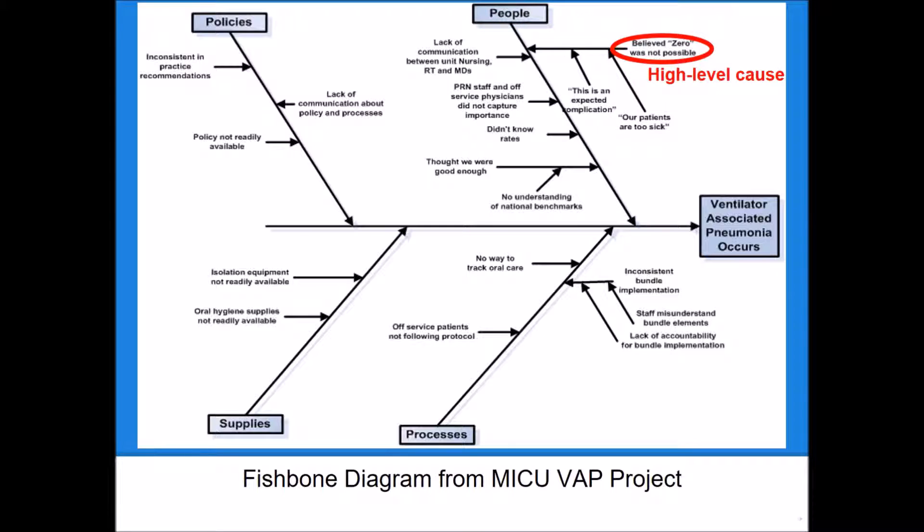They then dug down into, for instance, the people category to think of what specific causes might be contributing. For instance, they decided that many of the staff might not even believe it's possible to have zero ventilator associated pneumonias. But then they continued to ask why. Why might this be? And for instance, when talking to some of their staff, they realized that many staff believe that ventilator associated pneumonias are just an expected complication of their patient population, or that their patients are just too sick to ever be able to completely eliminate ventilator associated pneumonias.